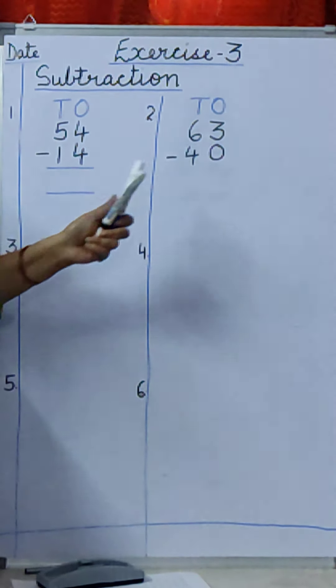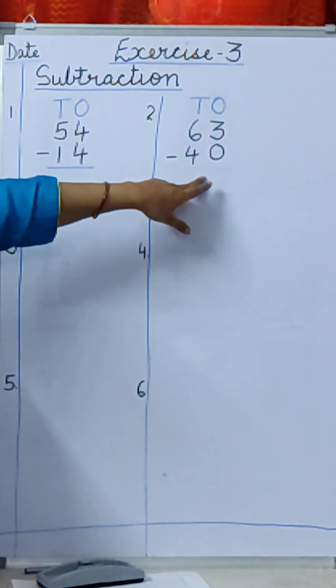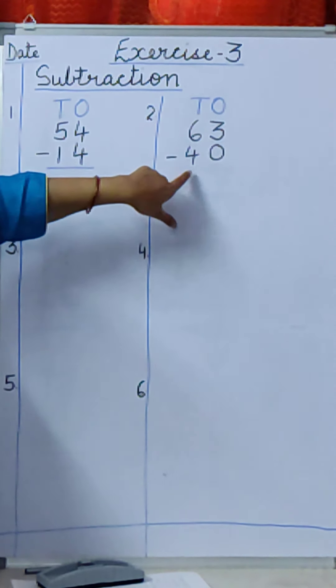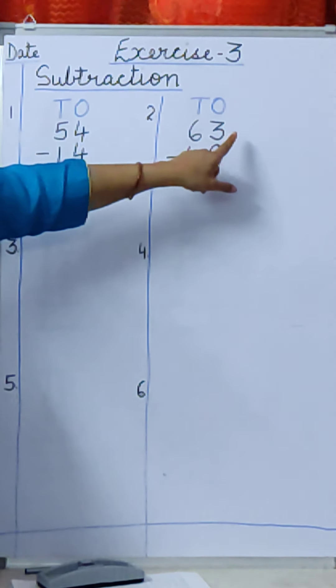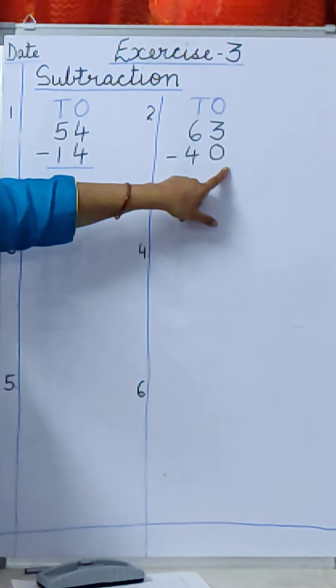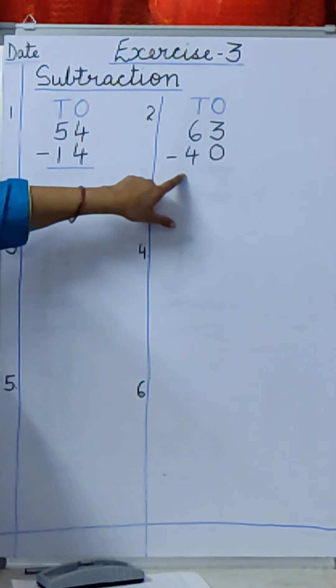Now this is 63 minus 0, 4. Or 4, 0, 40. 63 minus 40. So first you will minus 3 minus 0. And then you will minus 6 minus 4.